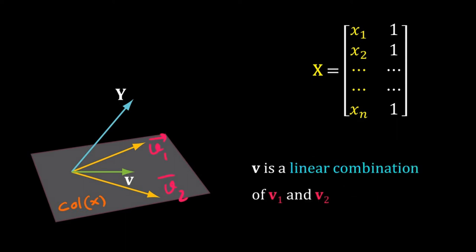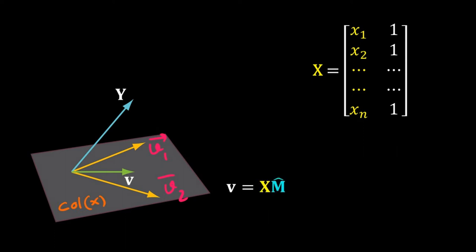As v is on the column space of X, it must be a linear combination of v1 and v2 — the column vectors of X. So we can write v = X·m̂. Now, what is m̂?